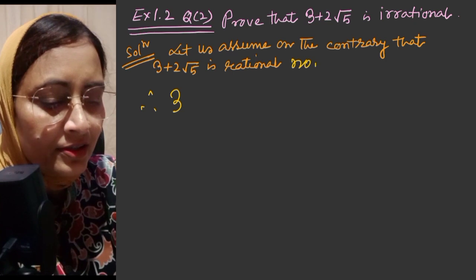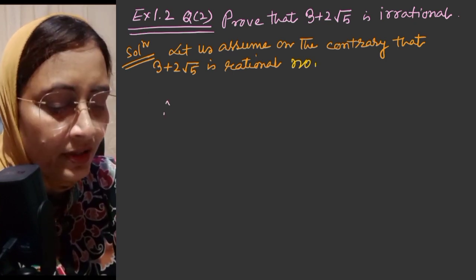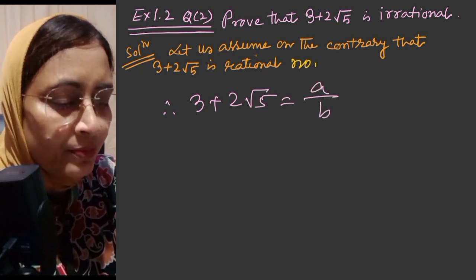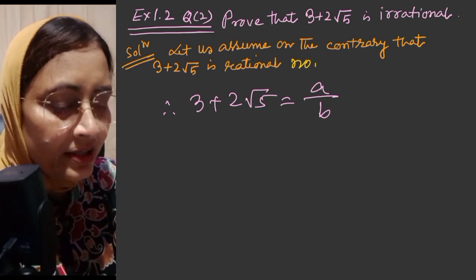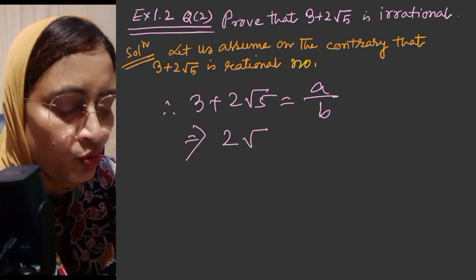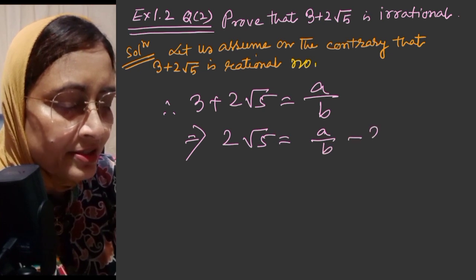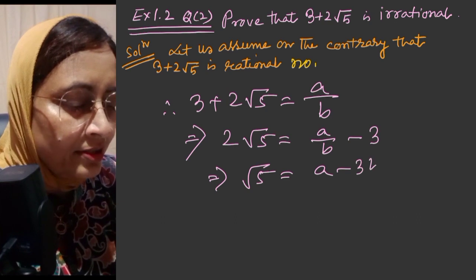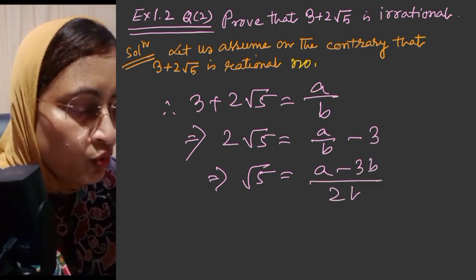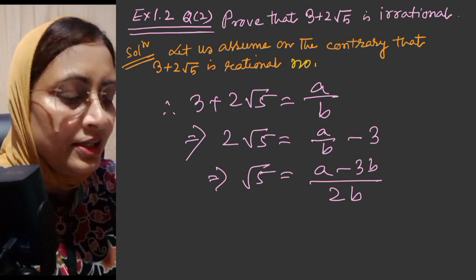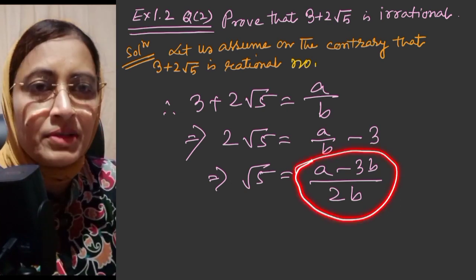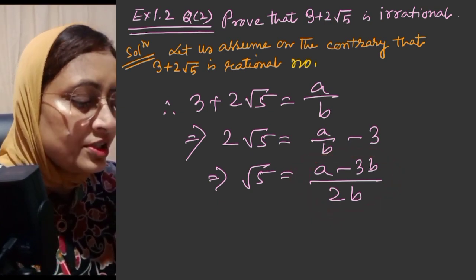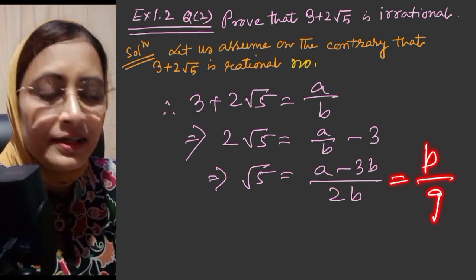Therefore, 3 plus 2 root 5 is equal to A by B format, where A and B are integers. Then 2 root 5 is equal to A by B minus 3, which implies root 5 is equal to A minus 3B by 2B. Since A and B are integers, and 2 and 3 are also integers, this is in P by Q format.